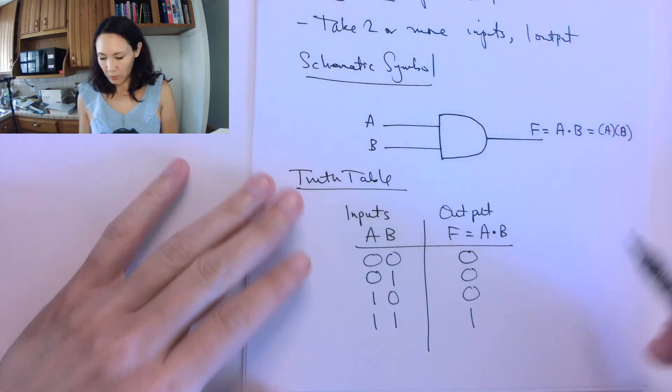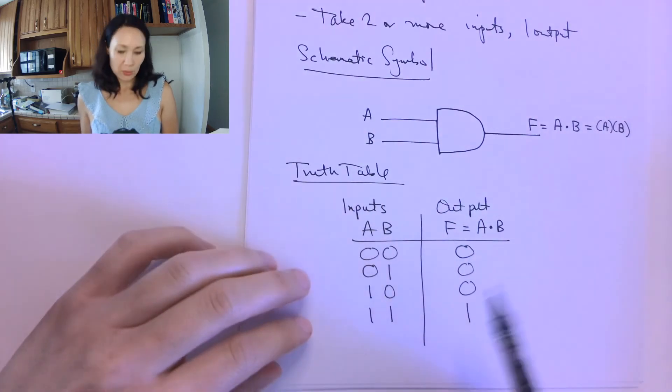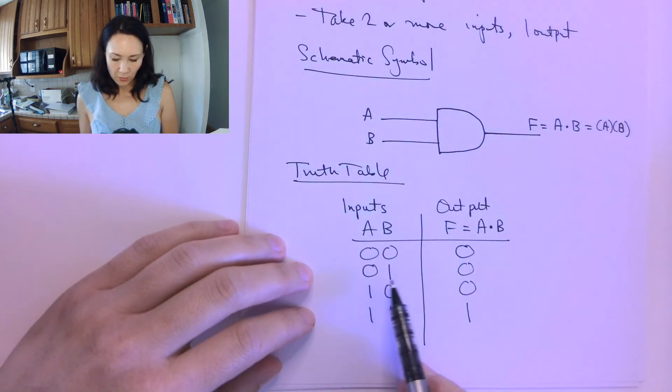And remember, this does implement binary multiplication, because 0 and 0 is 0, 0 and 1 is 0, 1 and 0 is 0, and 1 and 1 is 1.